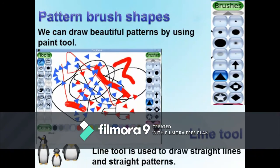Line Tool: The line tool is used to draw straight lines and straight patterns. It works quite similarly to the paint tool and has the same brush shapes in the sub-tool box. The only difference between the paint tool and the line tool is the order in which the drawing is displayed. While using the paint tool, you can see the image as you draw it. On the other hand, while using the line tool, you will see only a straight line from the starting point to the ending point.